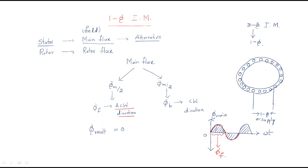The second part is called the backward flux, φb, with a maximum value of φm/2. It is in the negative direction and rotates in the clockwise direction.